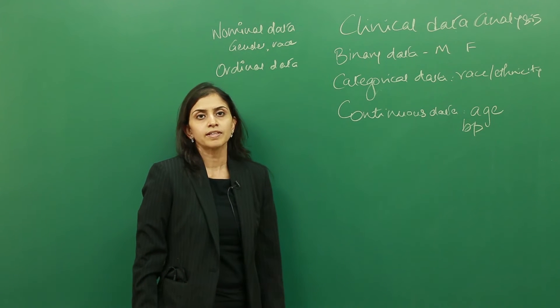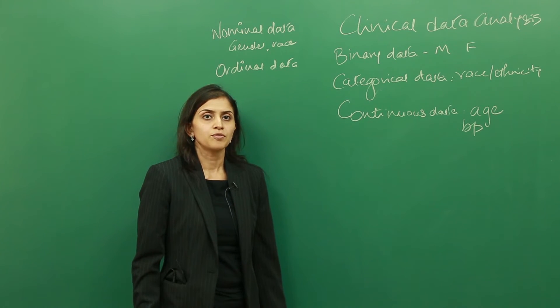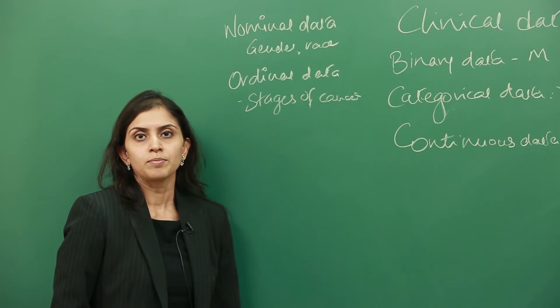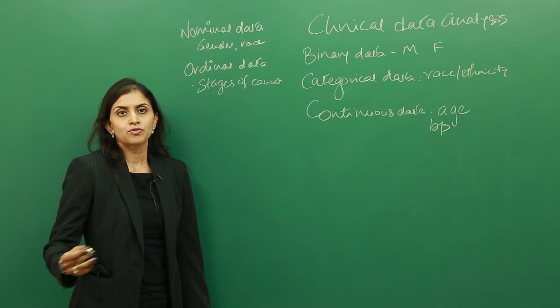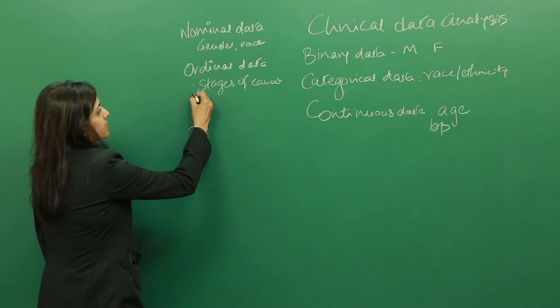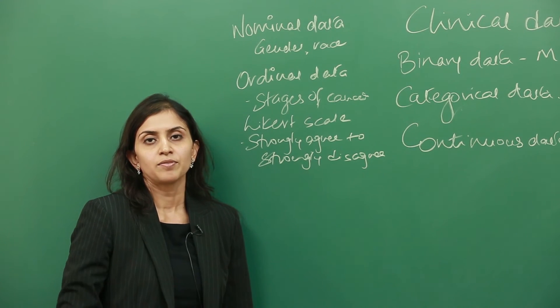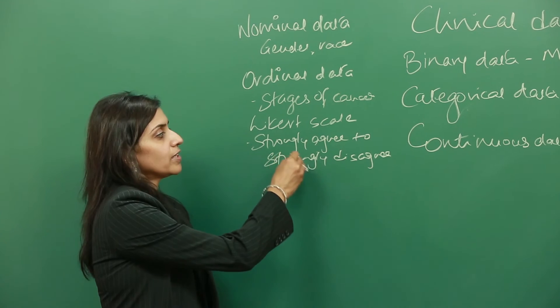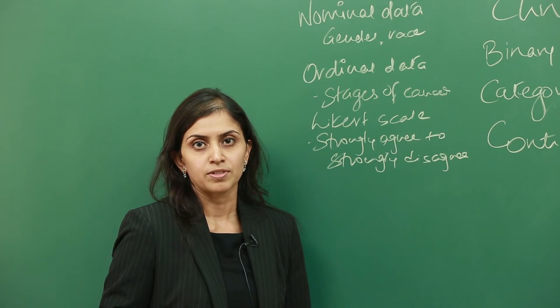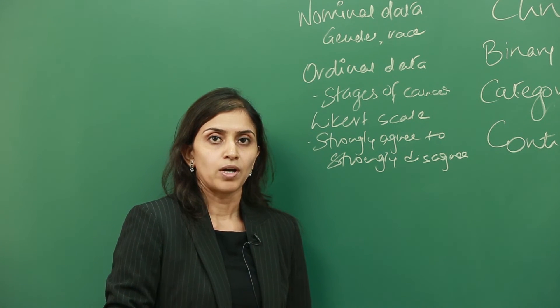The next comes ordinal data. Ordinal data can be rank ordered. Depending on the study question or the variable itself, you can rank order it. Some examples would be stages of cancer, where you can rank order them from the first stage all the way through the fourth stage. It doesn't mean one is better or worse than the other. The same thing for a Likert scale, which goes from strongly agree to strongly disagree. We can create categories out of them and rank order them in that preference. We could say strongly agree being one and strongly disagree being five. These are arbitrary numbers. It doesn't mean five is better or worse than one.